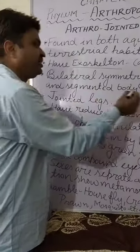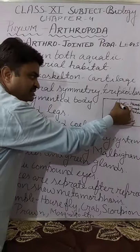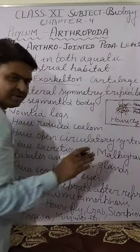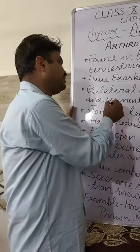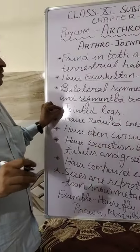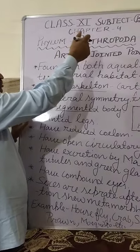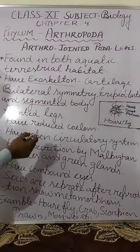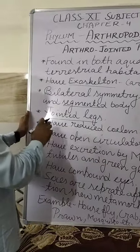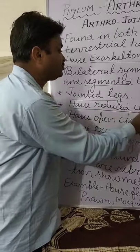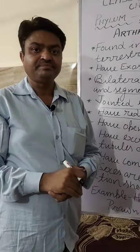Their body is also segmented — we can divide their body into head, thorax, and abdomen. Segments are found in their abdomen, meaning ring-like structures are found, so we can say they have a segmented body. They have jointed legs — the name Arthropoda is generated from jointed legs. They have a reduced coelom, meaning their coelom size is minimized.